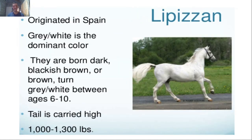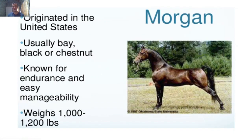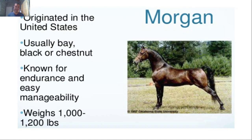Next is the Lipizzan, which originated from Spain. The dominant color is gray or white, but they are born dark — blackish brown — and gradually turn gray around 6 to 10 months. Their tail carriage is high, similar to the Arabian horse. They weigh 1,000 to 1,200 pounds. The Morgan from the US is usually bay or chestnut, known for endurance and manageability, and weighs 1,100 to 1,200 pounds.